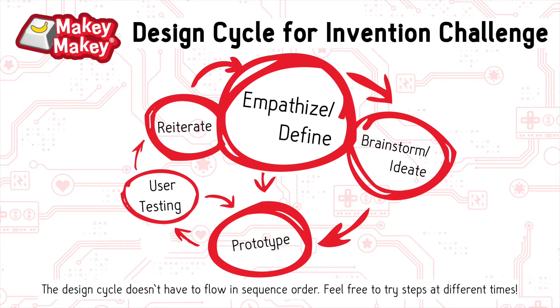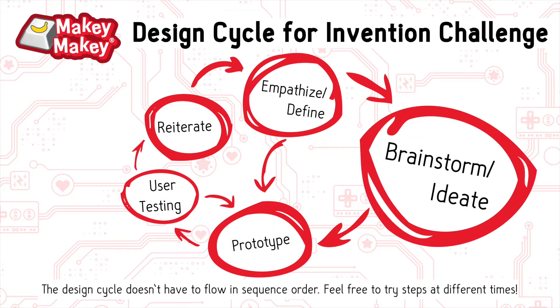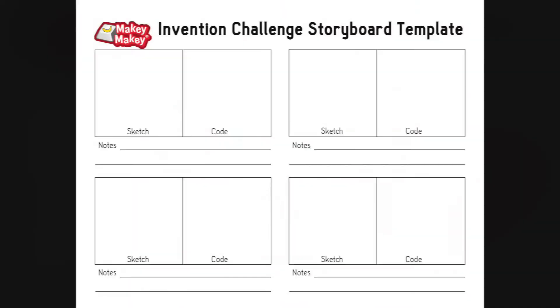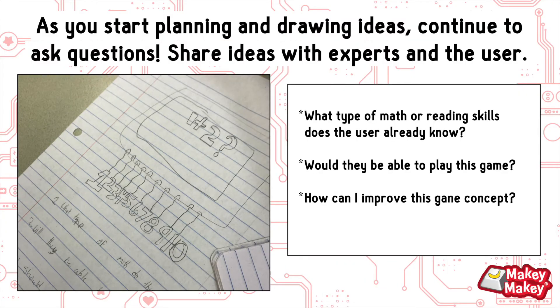After you've figured out more about what your user needs, it's time to start brainstorming and ideating — that means thinking about what you want to make. You should sketch and storyboard your ideas first. Plan your ideas, draw them out, and continue to ask questions and share with the person you're making the game for.